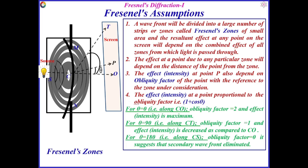Here we are going to discuss the obliquity factor, that is 1 plus cos theta, and how it is proportional to the effect at a particular point. Suppose we intend to find out the effect or intensity at this point due to the first half-period zone. This is your first half-period zone, this is your second half-period zone, this is your third half-period zone, this is your fourth, and so on.